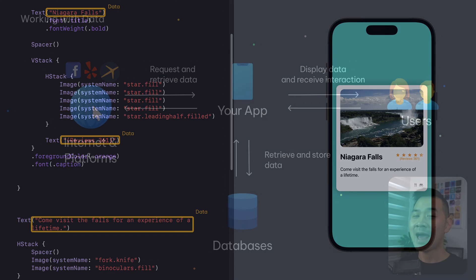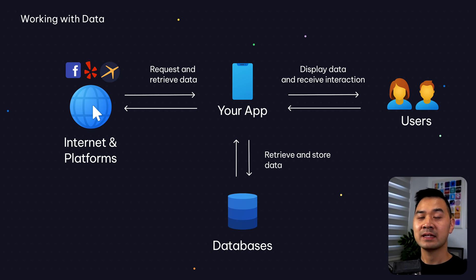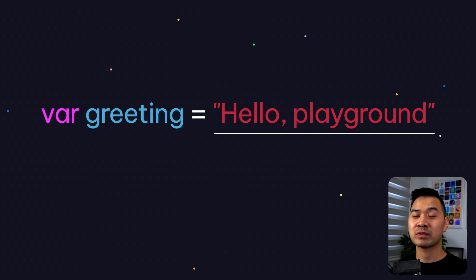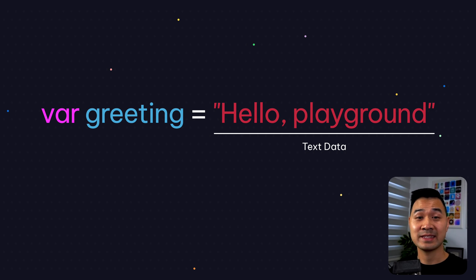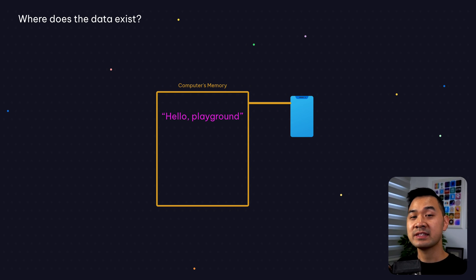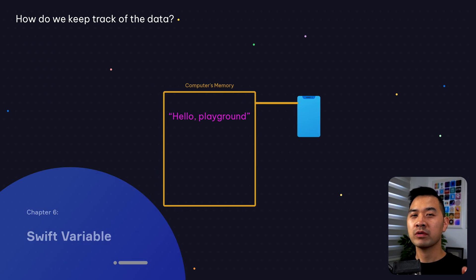Apps are all about manipulating data — pulling data from various sources, manipulating that data, showing it to users through the app user interface, capturing user interaction as data, processing it, storing and retrieving data to and from databases, and so on. Later in this lesson we'll talk about different types of data, but for now let's go back to the code statement. This is a piece of text data. Where does it live — in other words, where does it exist? It exists in the computer's memory, which is memory space allocated for our app to function.